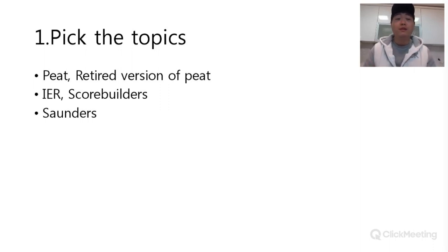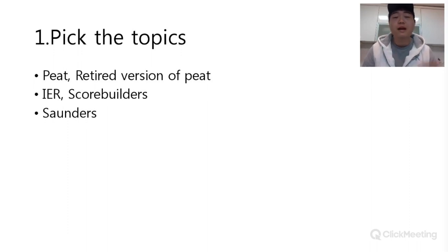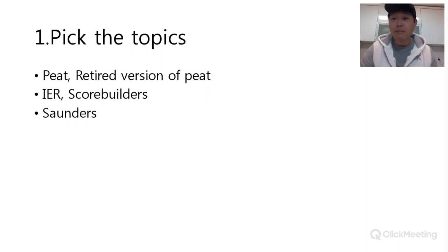If you think you've picked enough topics from there, then you should move on to IER and scroll builders. And if you need more information about the topics, you should look at Sounders or Macroheels — but in my personal experience, Sounders might be last. So: PEAT and retired PEAT first, then IER or scroll builders, then Sounders.